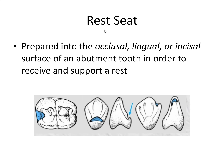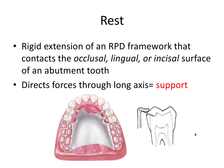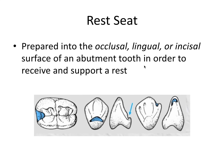The rest seat is prepared into the occlusal, lingual, or incisal surface of the abutment tooth in order to receive and support a rest. You might have wondered what this little part of the tooth is — it's not purely anatomical because an operator had to use a handpiece and bur to make this space so a rest could fit in. There are different rest seats depending on which surface they're being prepared.